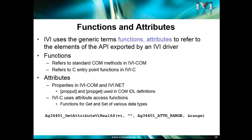Just a brief word on functions and attributes. In the standards, it's sometimes difficult to write a standard that makes sense to programmers from both a COM and .NET environment. IVI uses the generic terms function and attributes to refer to the elements of the API exported by an IVI driver. People in the .NET world tend to talk about methods and properties, while people in the C world tend to talk about functions and attributes. The consortium uses terms like functions and attributes consistently to simplify the standards.